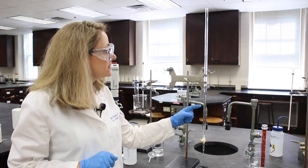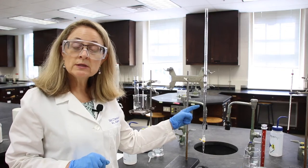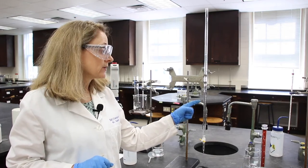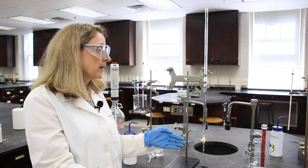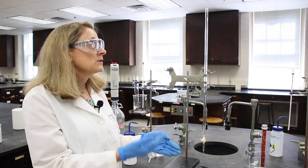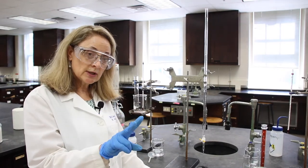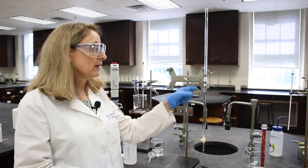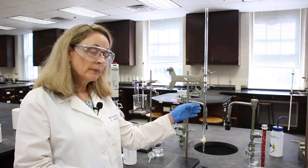The smallest division here is 0.1 milliliters. So that means we need to estimate to the hundredth. So there should be two digits after every reading on this burette.